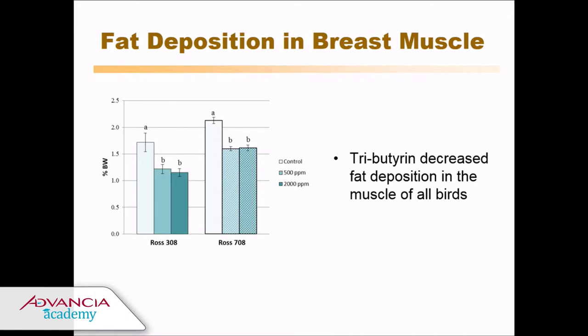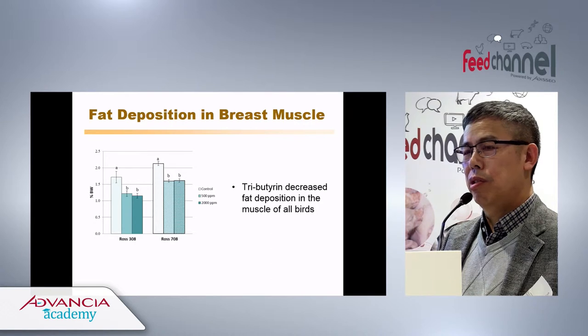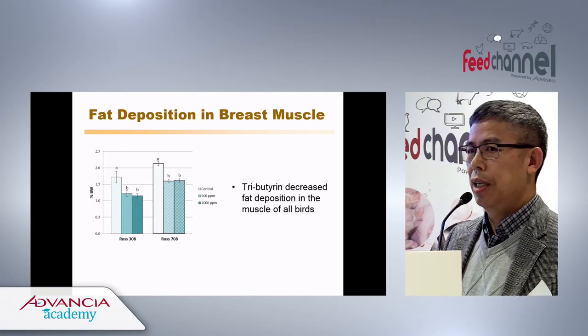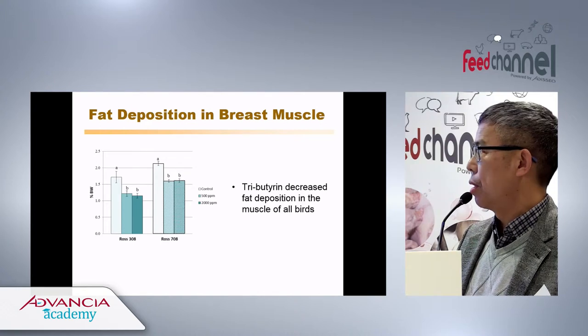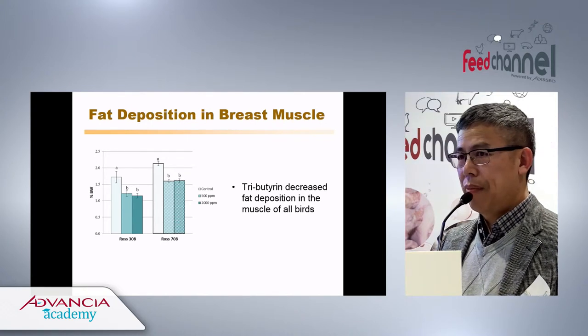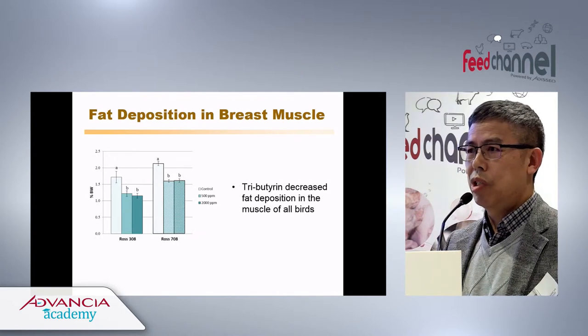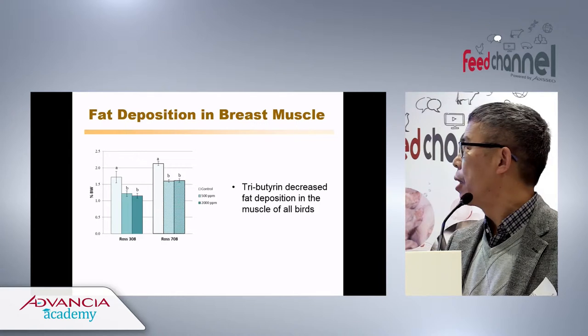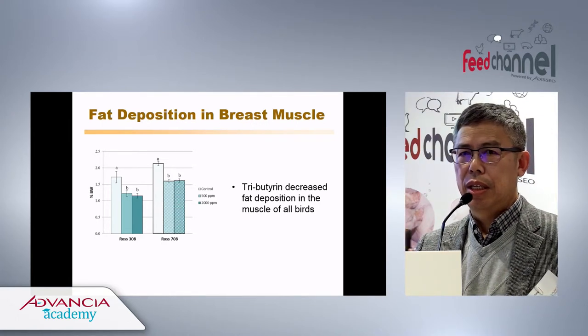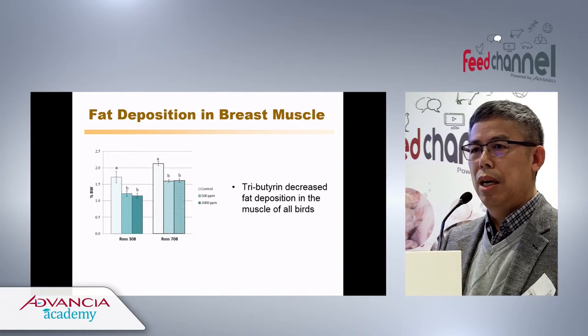We also examined fat deposition in the breast muscle and found the opposite pattern for Ross 708 — the control group had higher fat deposition in breast muscle compared to Ross 308. There is a strain difference in the host response to dietary butyrate.